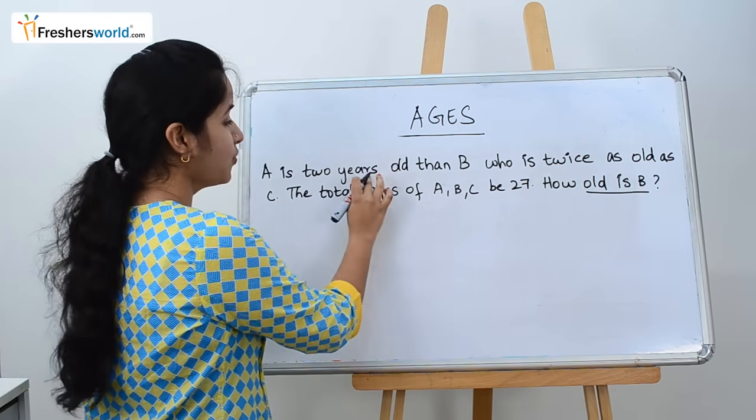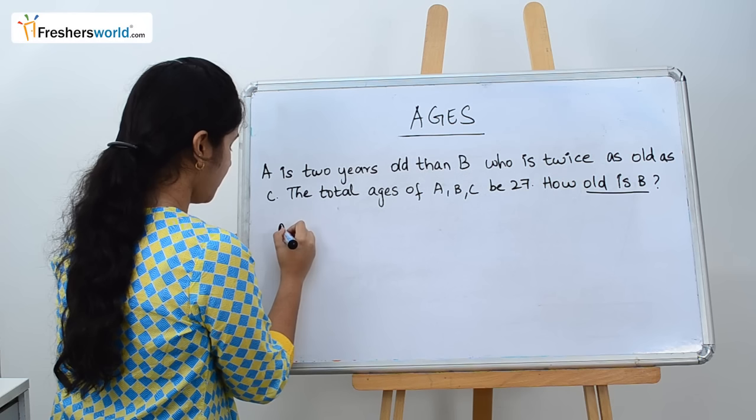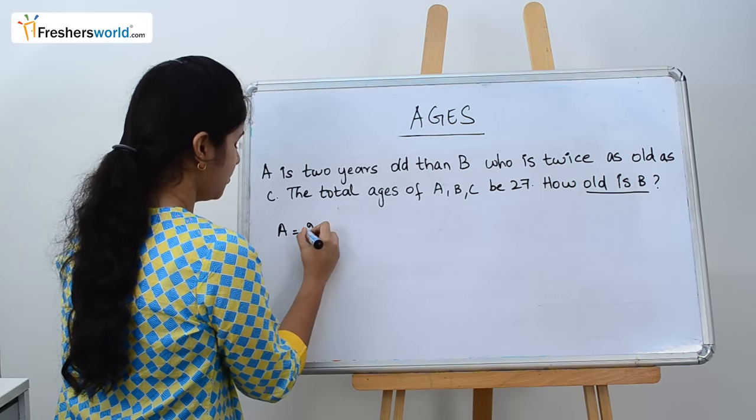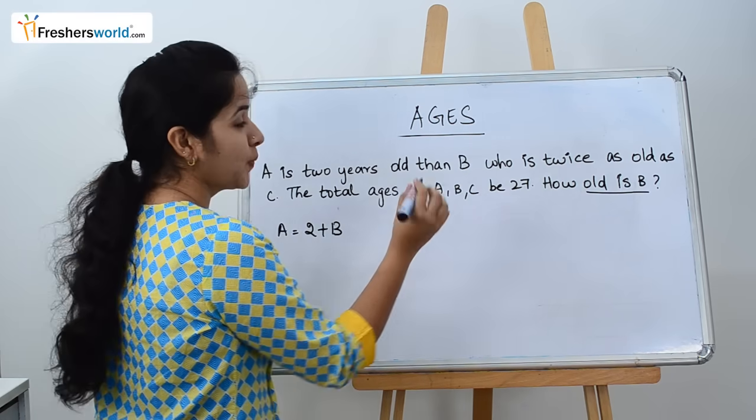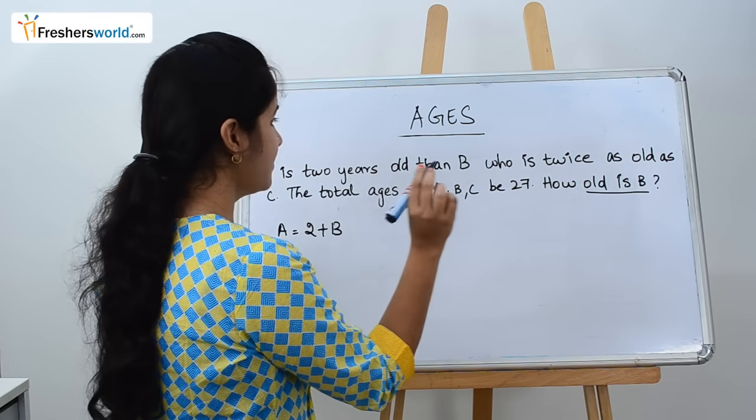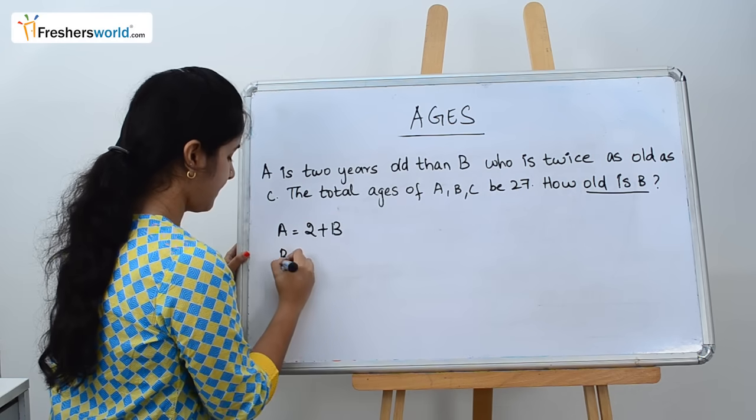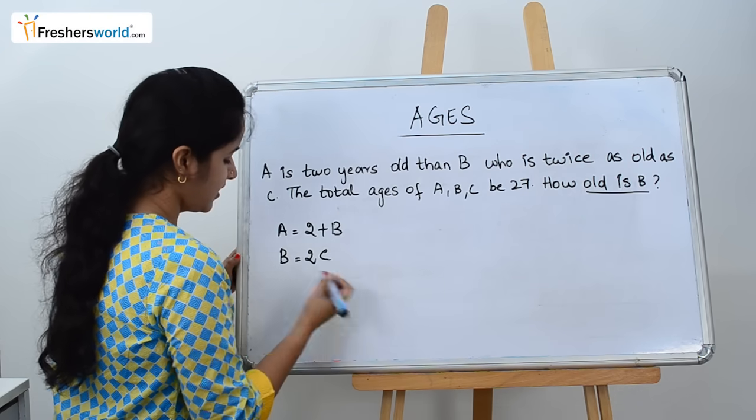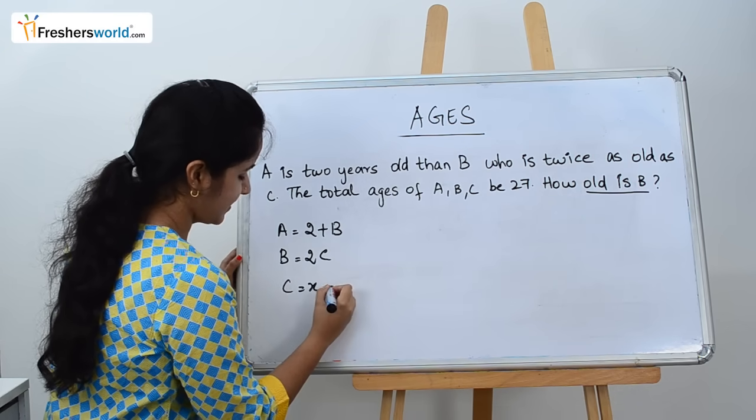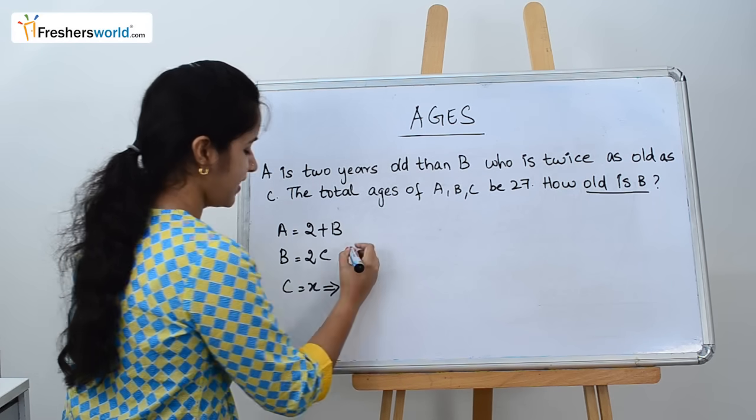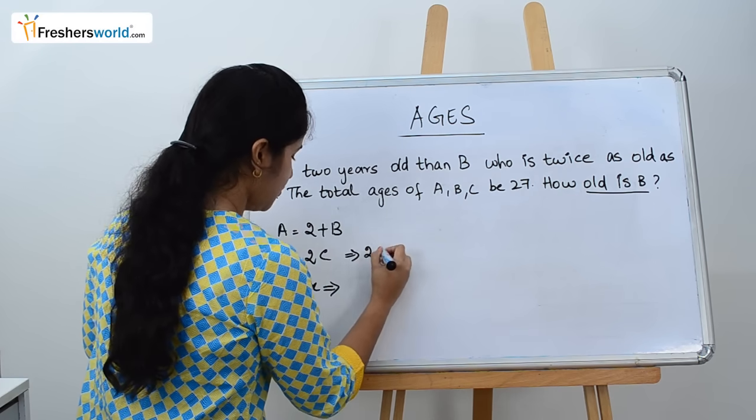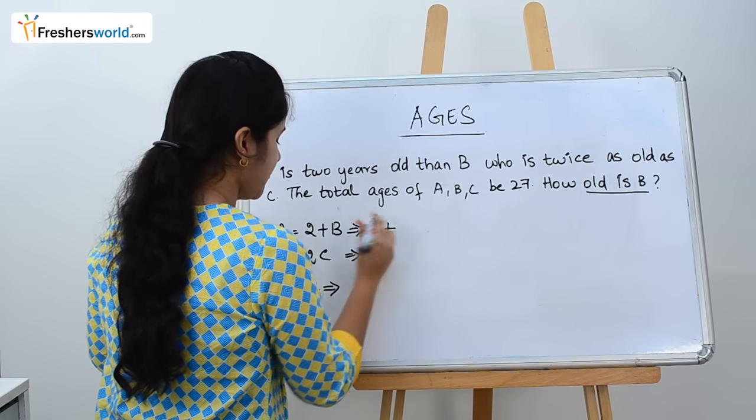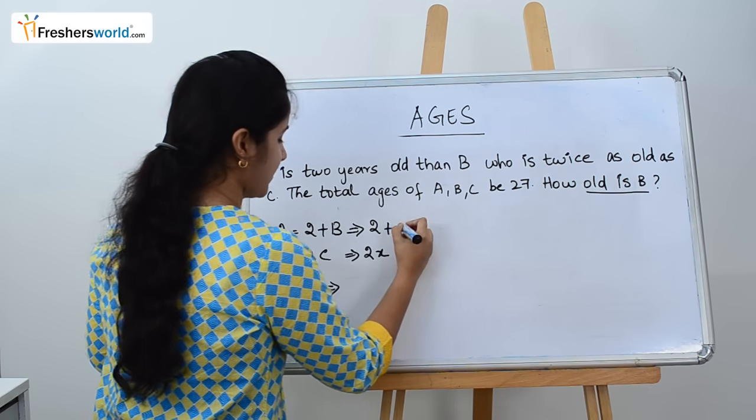They have given A is 2 years older than B. B is twice as old as C. We can take C as X. If C is X, then B becomes 2X, and A becomes 2 plus B, which is 2 plus 2X.